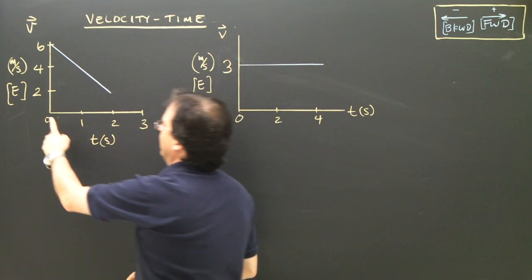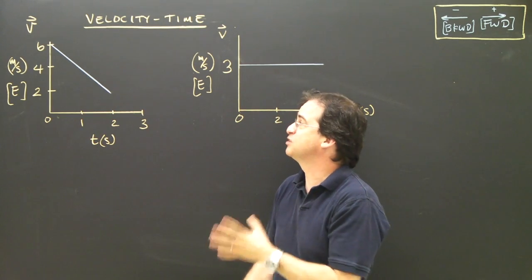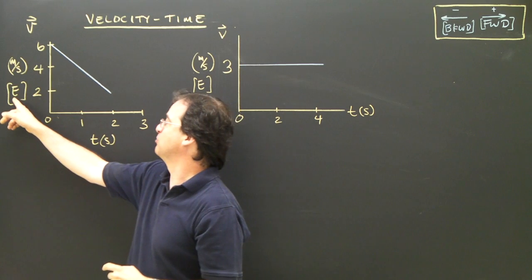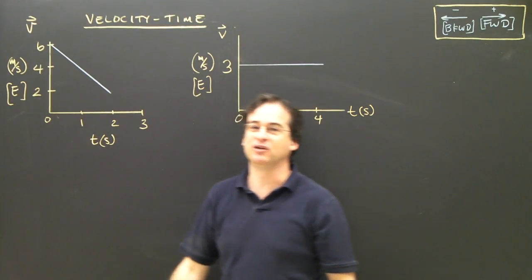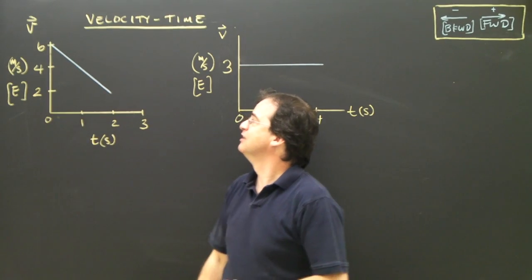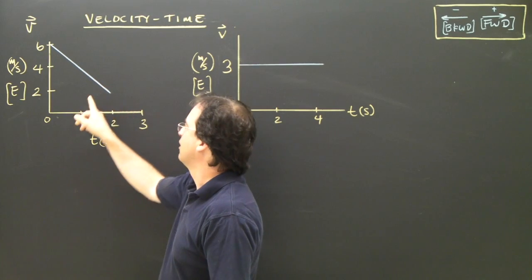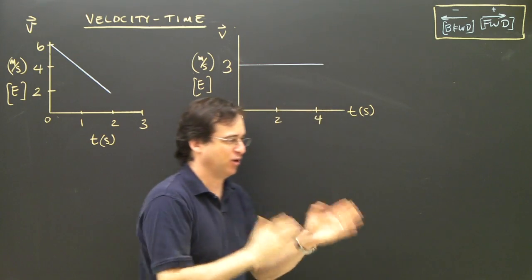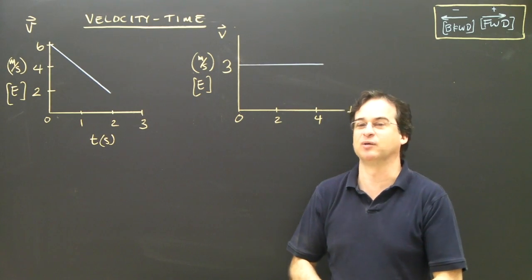Let's look at the numbers. At zero seconds, the value is positive six — that's 6 meters per second. I'm running at 6 meters per second east because it's positive. At one second, I'm going 4 meters per second — still forward, but a little bit slower. At two seconds, I'm going positive 2 meters per second. So running at 6, then 4, then 2 meters per second forward — I'm slowing down.